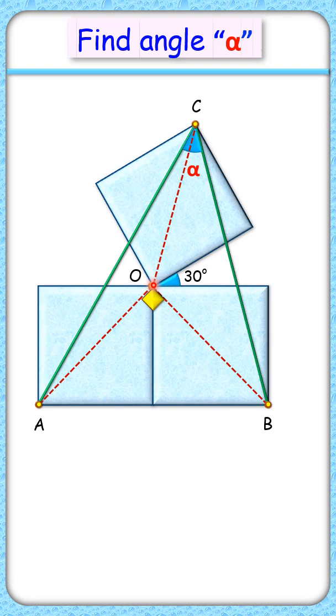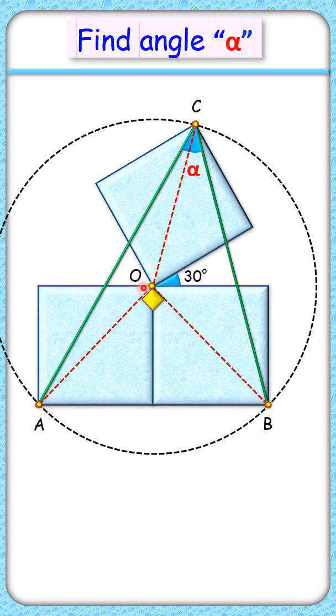Now, with OC as the radius, if we draw a circle, it will pass through point B and A also, as all these three lengths are equal. And in a circle, chord AB is sustaining an angle of 90 degrees at the center.